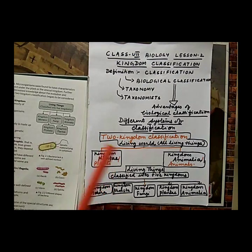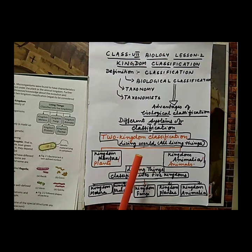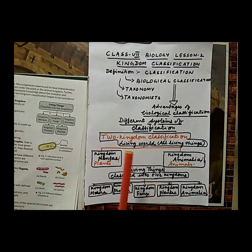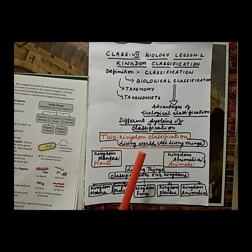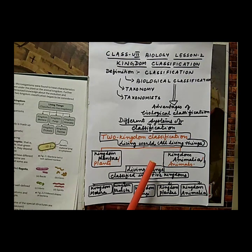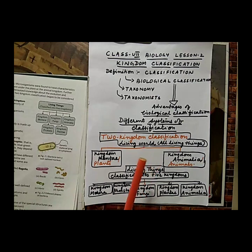Theophrastus, a follower and successor of Aristotle, classified plants on the basis of size into herbs, shrubs, undershrubs, and trees. However, the above methods of classification based on visible characteristic features are not suitable for every organism. For example, bees, birds, and insects could be categorized under the same group based on the presence of wings, but they are very different in their own characters. Similarly, rose plants and fern plants could be categorized under the same group based on size, but they are very different from each other.